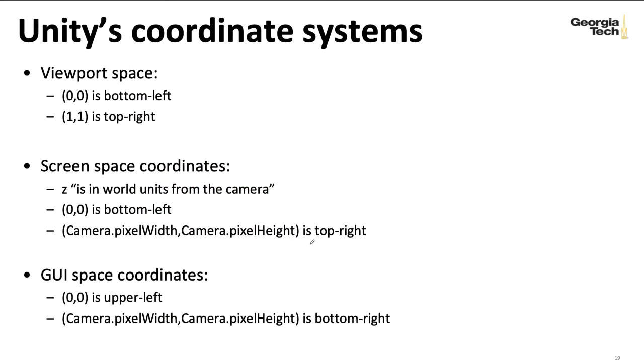Unity defines several coordinate conventions. Again, these are Unity-specific. If you're using some other engine, there may be a different set of nomenclature. It defines a viewport system that has 0, 0 here on the bottom left and 1, 1 on the upper right. The viewport system doesn't have any sense of a z-coordinate. Now,